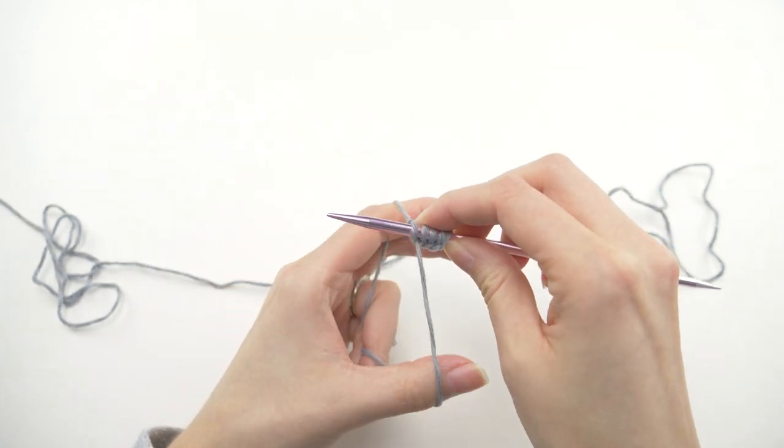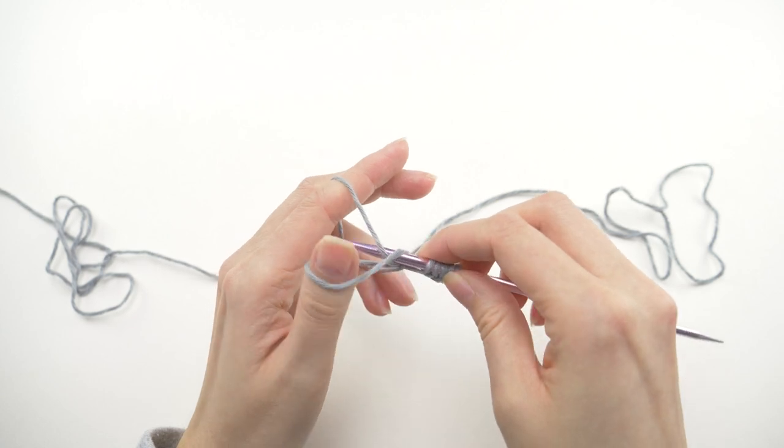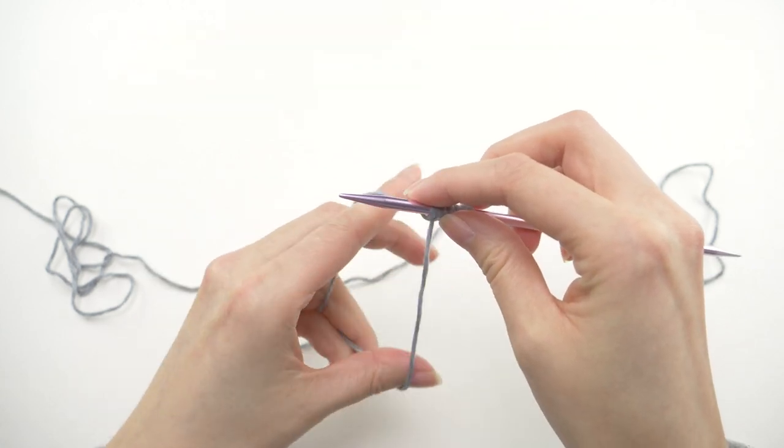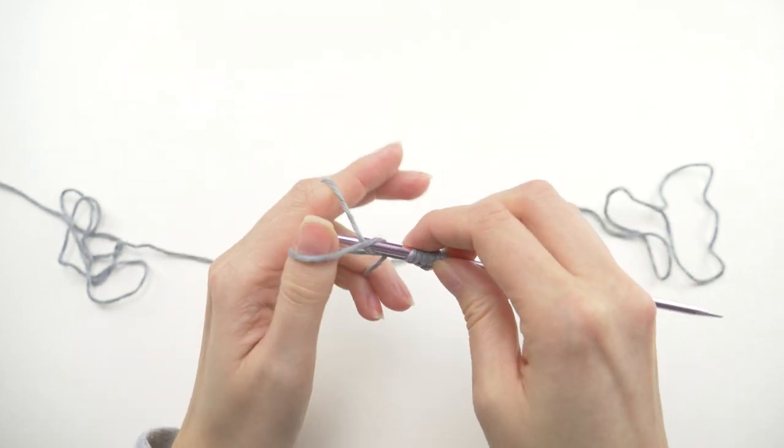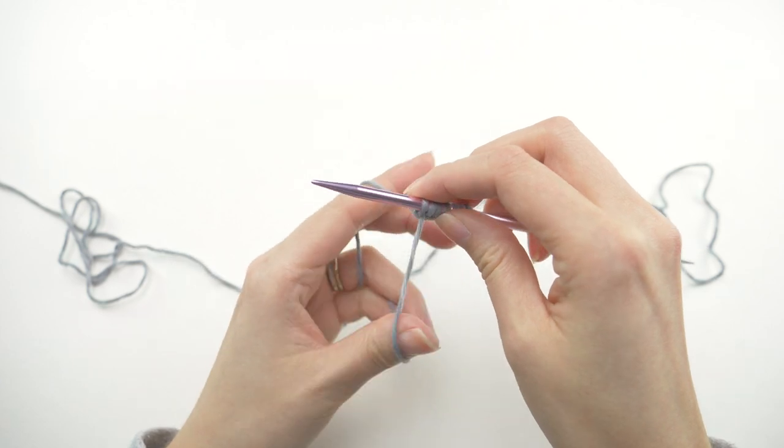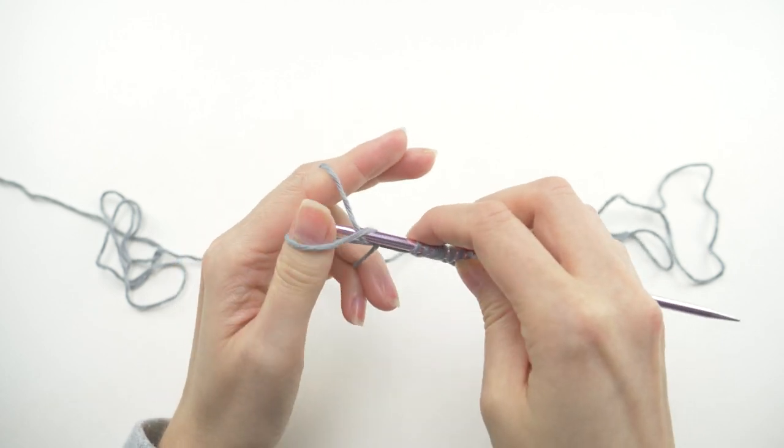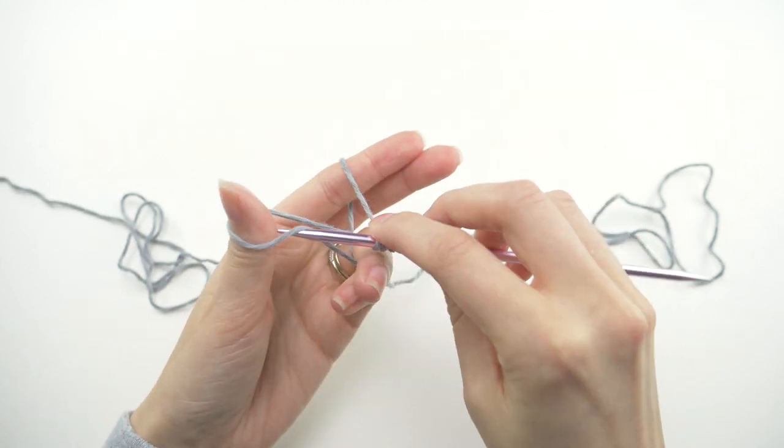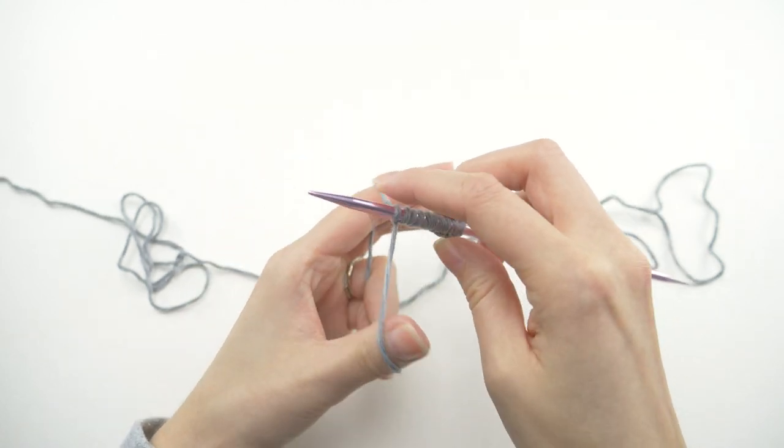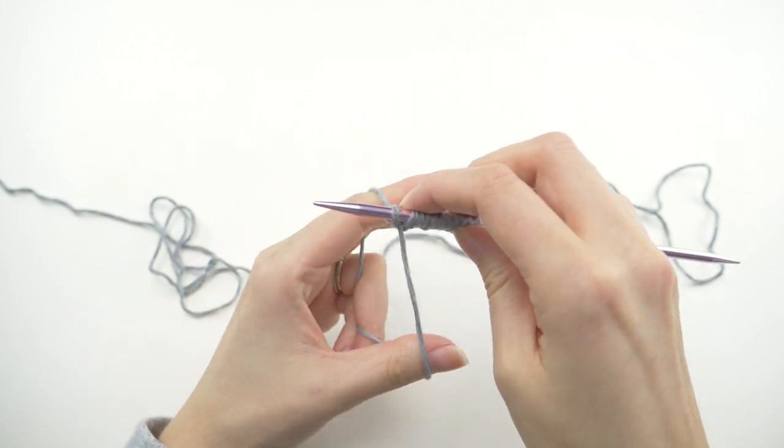By the way, I'm sure you've noticed I'm working with double pointed needles at the moment. Honestly, that's because I'm working with a swatch, so it's plenty long enough, and because they're a little shorter, they're just much easier for me to use while filming. I actually worked the full project on a pair of circular needles because that's what I prefer using, and you'll see those when we get to the bind off.